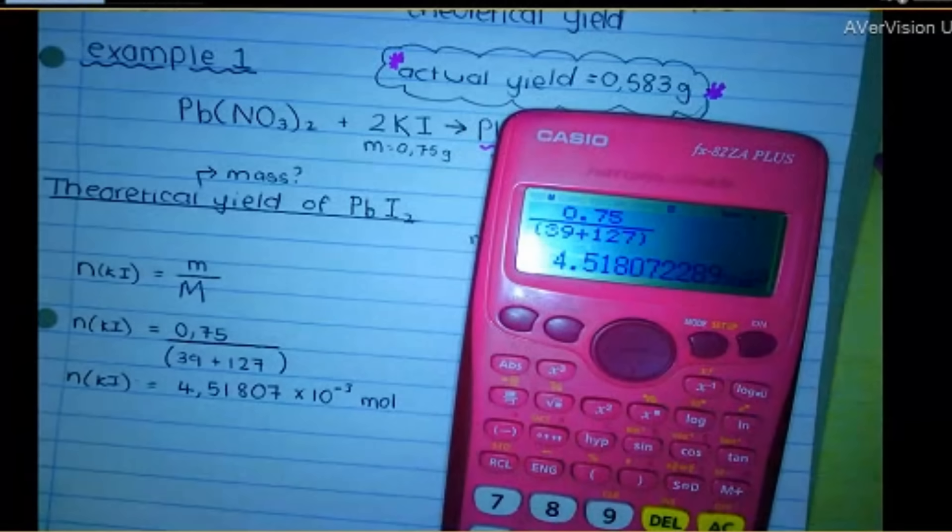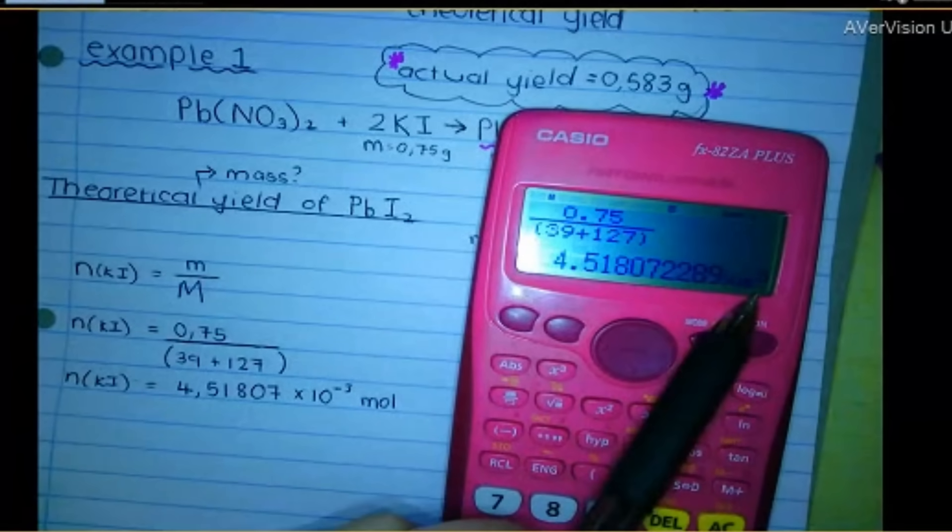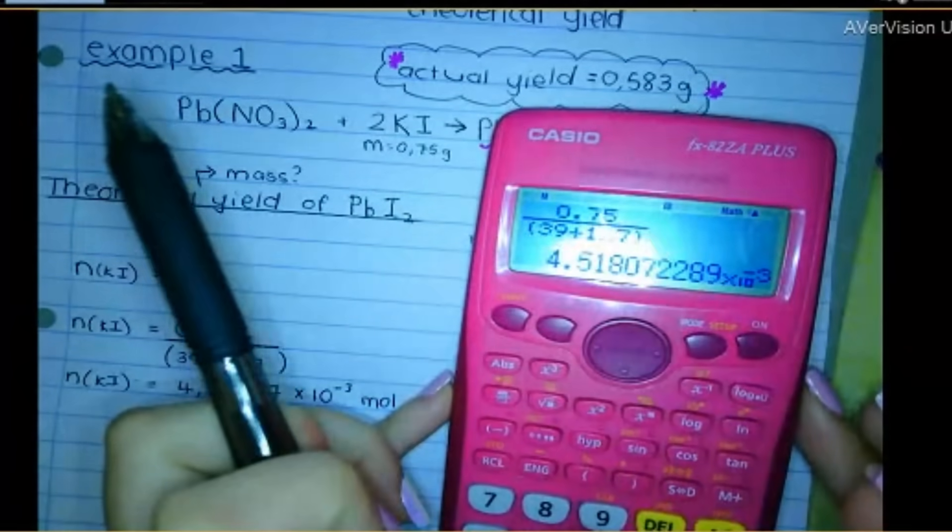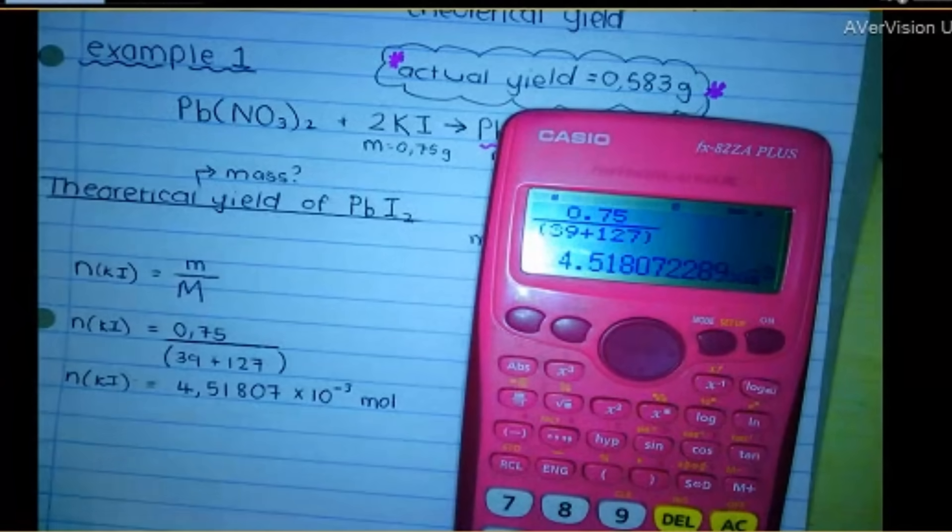4.51807 times 10 to the negative three mole. Your calculator may not have given it to you in scientific notation. I think I've set mine so that it does. If it gave it to you like 0.004518, then that's fine. Just make sure you leave it to enough decimal places.